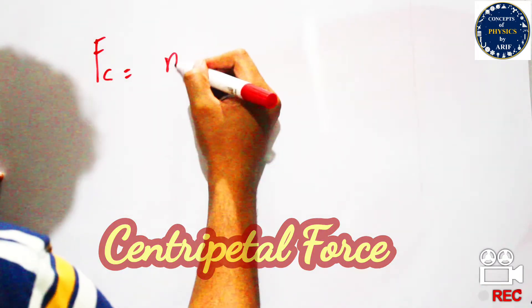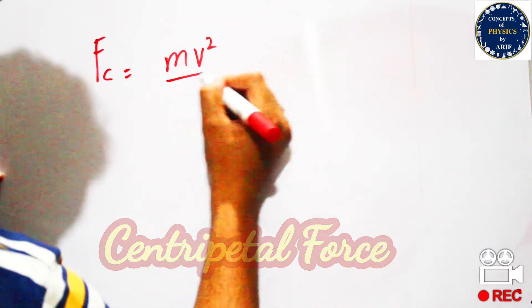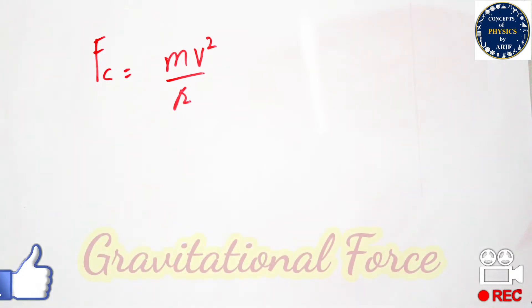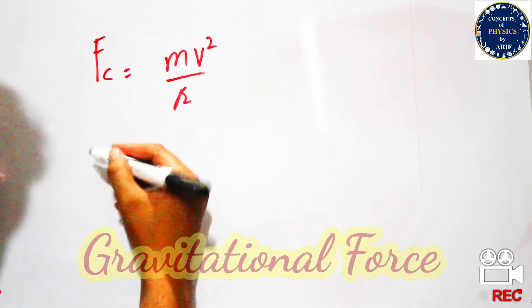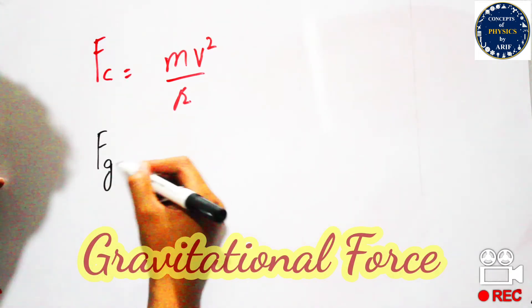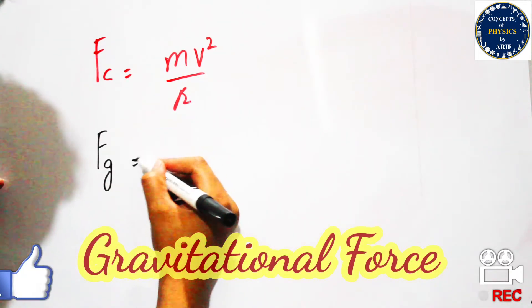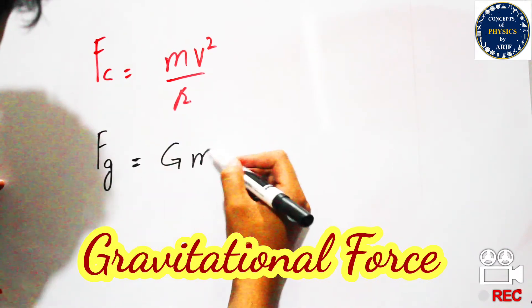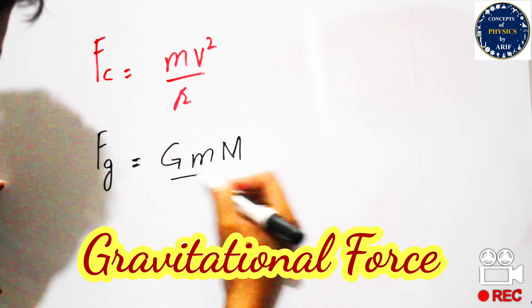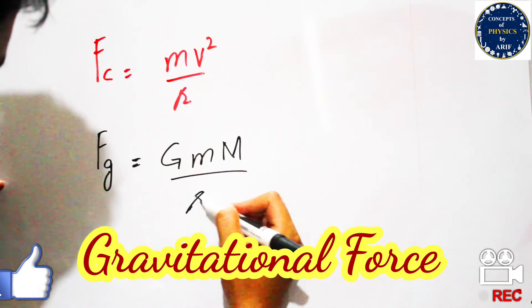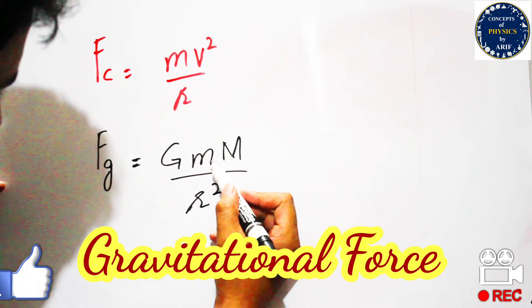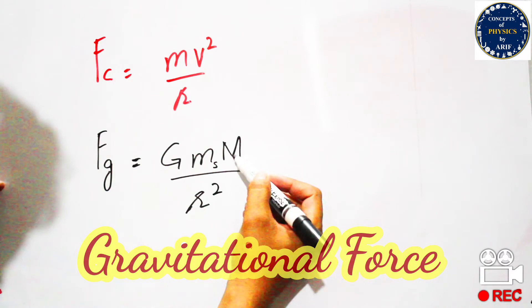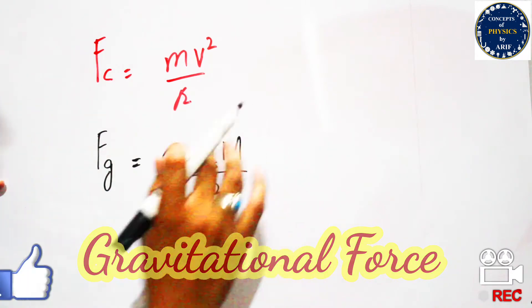The formula for gravitational force is: F_g = G·m·M / r², where small m is the mass of the satellite, capital M is the mass of the Earth, and G is the gravitational constant.